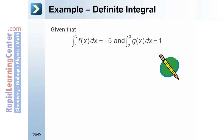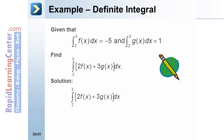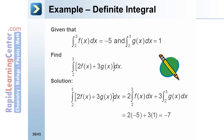Example: given that the integral from 2 to 3 of f of x is equal to negative 5, and the integral from 2 to 3 of g of x is equal to 1, find the integral from 2 to 3 of 2f of x plus 3g of x. Solution: using the linearity property, this equals 2 times the integral of f of x plus 3 times the integral of g of x, which equals 2 times negative 5 plus 3 times 1, resulting in an answer of negative 7.